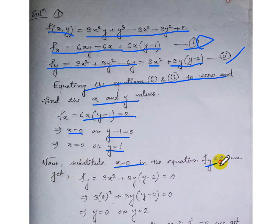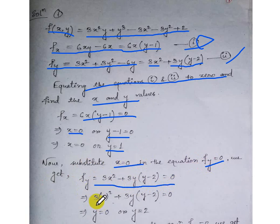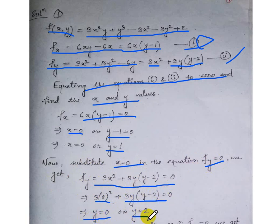Substituting x = 0 into fy = 0: we get 3(0)² + 3y(y - 2) = 0, which gives 3y(y - 2) = 0. So y = 0 or y = 2. With x = 0, this gives the critical points (0, 0) and (0, 2).